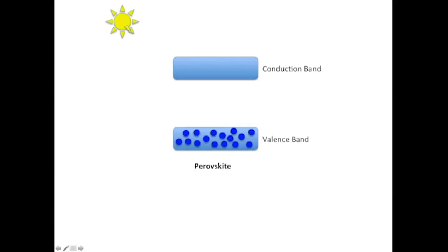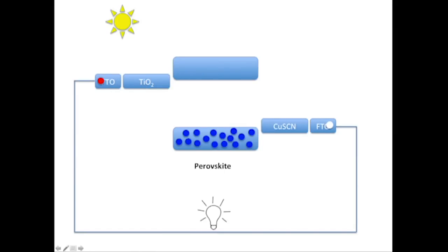The perovskite layer absorbs light and creates electrons in the conduction band and holes in the valence band. On one side, titania selectively transfers electrons from perovskite to the FTO anode. On the other side, copper thiocyanate selectively transfers holes through the carbon particles to the FTO cathode.